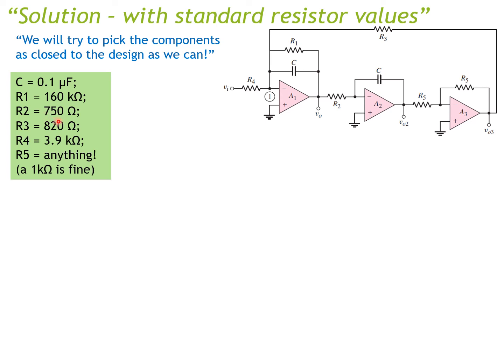For R2 and R3, it's tricky — rather than choosing them equal, choose values so that R2 × R3 is as close as possible to the design calculation of R2² — one slightly lower, one slightly higher. For R4, choose the closest standard value. R5 can be anything, such as 1 kilohm, since R5 and R5 cancel out anyway.